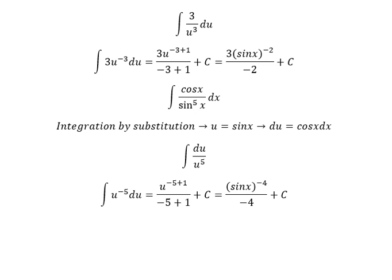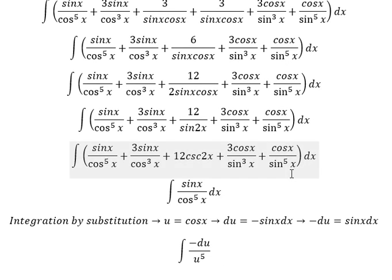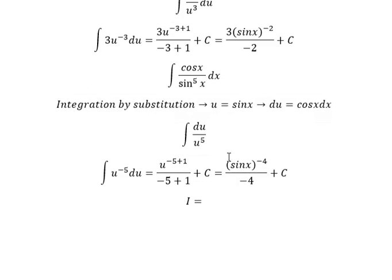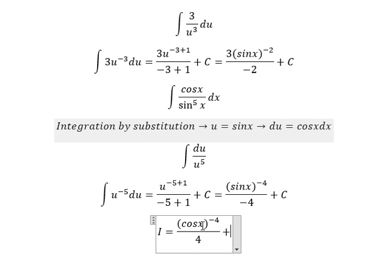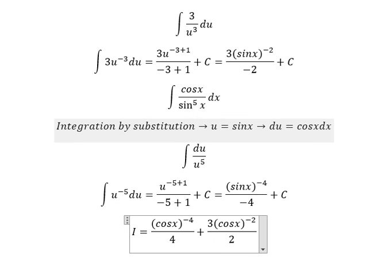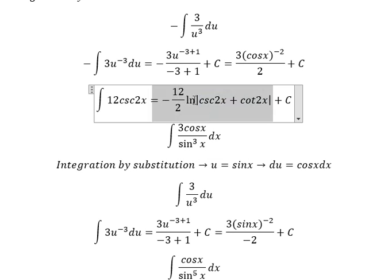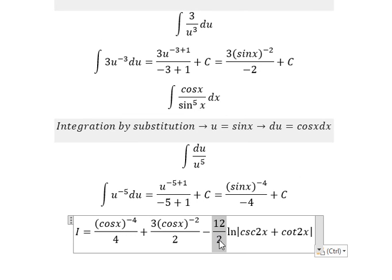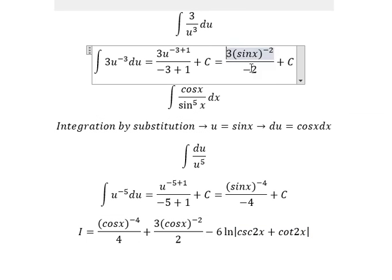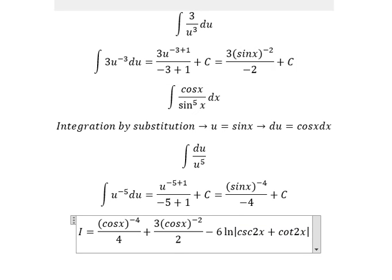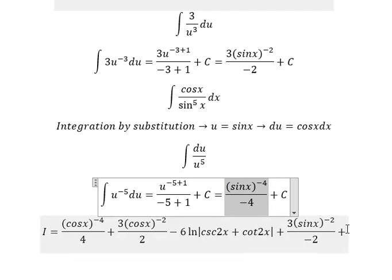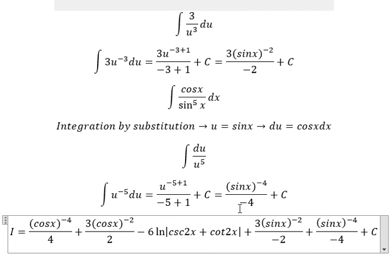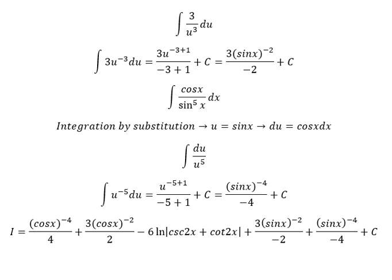Now we combine the answers of 5 integrations in here. For the first one, the next one, the third one — 12 divided by 2 you get about 6 — the fourth one, and the last one. And we pull about C, that's about the constant. This is the end, thank you for watching.